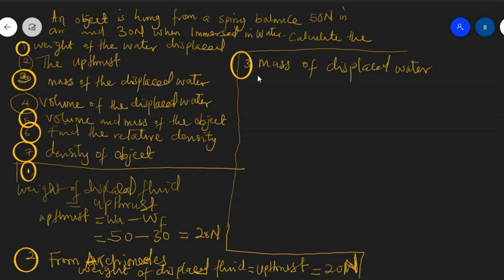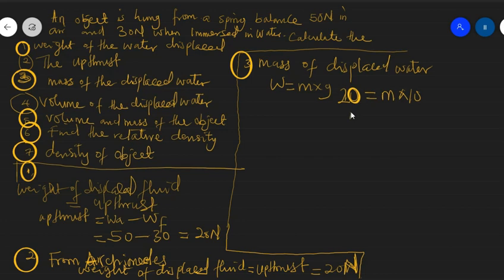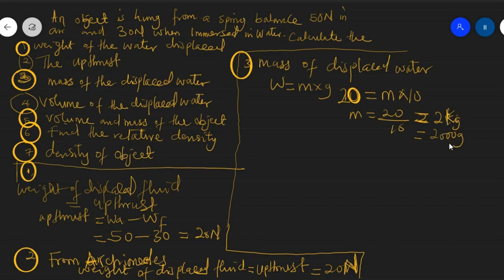The next part asks for the mass of the displaced water. I already know the weight of displaced water. Weight equals mass times gravity. So 20 newtons equals mass times 10 m/s². Dividing both sides by 10, mass equals 20 over 10, which is 2 kilograms. If you want it in grams, that's 2,000 grams, since 1 kilogram equals 1,000 grams.